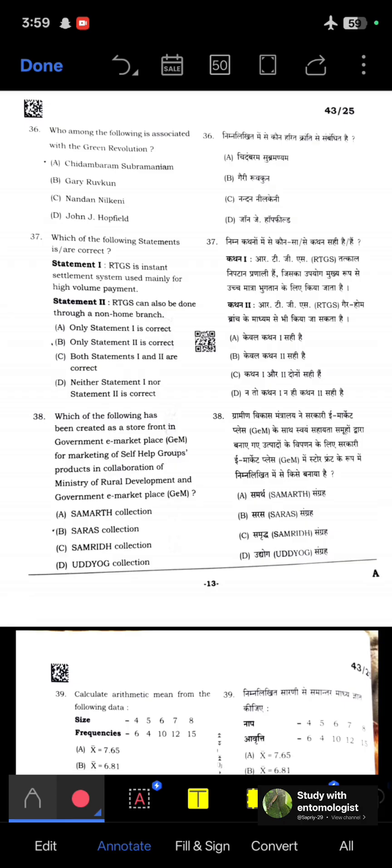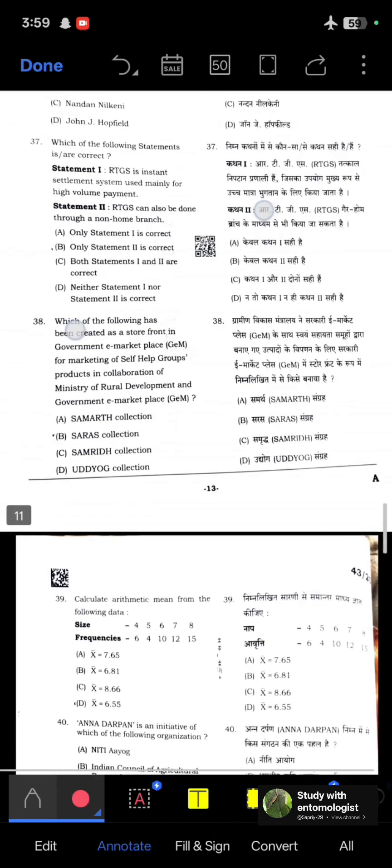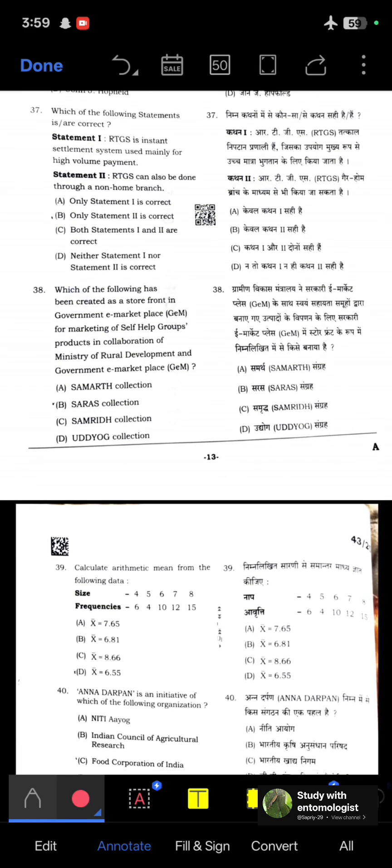Who among the following is associated with the Green Revolution? C Subramaniam, Chidambaram Subramaniam, was related to the Green Revolution. Which statements are correct? Statement 1: RTGS is an instant settlement system used mainly for high volume payment. Statement 2: RTGS can also be done through a non-home branch. Only statement 2 is correct because RTGS is for high value payment, not high volume payment.